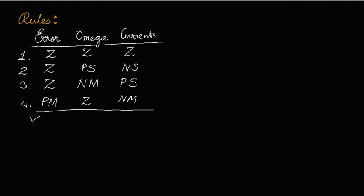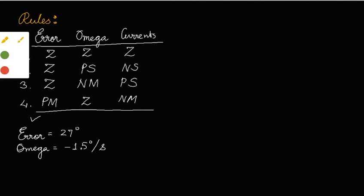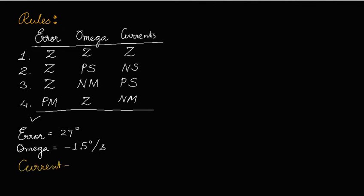Now I am given inputs: error is equal to 27 degrees, and omega is equal to minus 1.5 degrees per second. Under this situation, what should be the current?